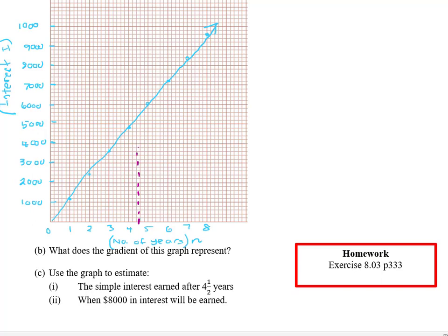So using a ruler we're going to draw a dotted line up until we hit our graph. And then we're going to draw a line coming across here. And we're going to read off what that says. Now yours is going to look a lot better than mine but it's approximately $5,200 worth of interest.